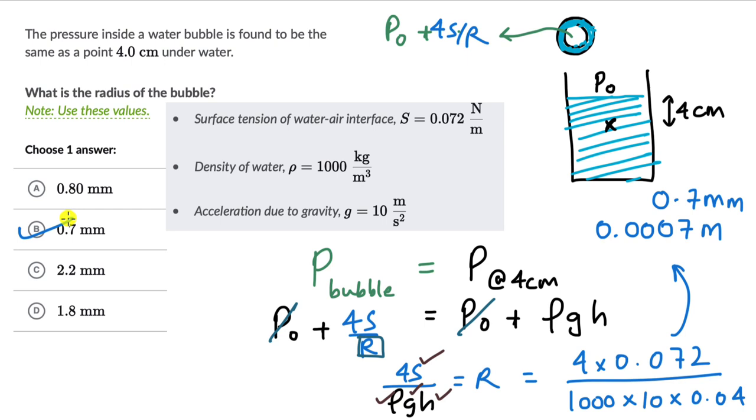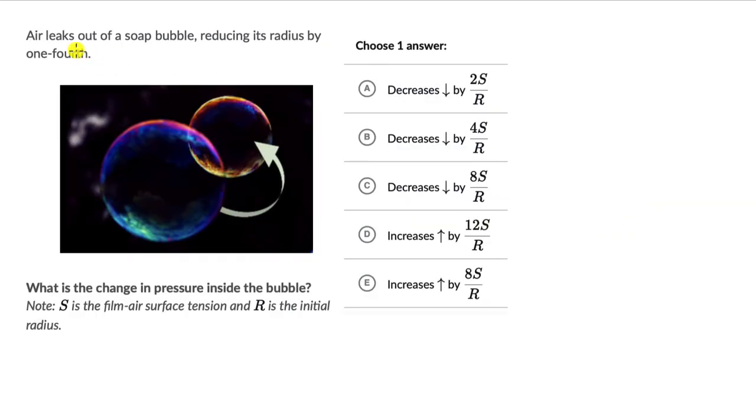Let's look at one more question. Here it is. So air leaks out of a soap bubble, reducing its radius by one fourth. What is the change in the pressure inside the bubble? And we can note that S is the film air surface tension, and R is the initial radius. So to begin with,